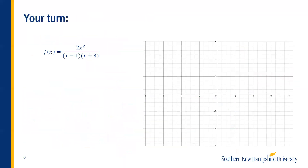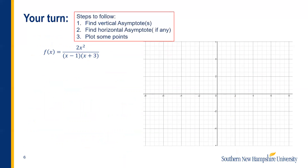Alright, so your turn — feel free to pause this video and attempt to graph this function on your own. If you want some steps to follow, here are my suggestions: first, find the vertical asymptote or asymptotes, since there could be multiple — look for numbers that make the denominator equal to zero. Then find any horizontal asymptotes if there are any. Then plot some points to get an idea of where the graph is located.